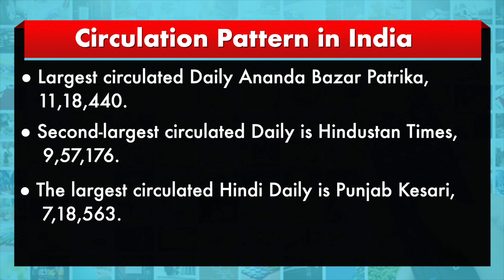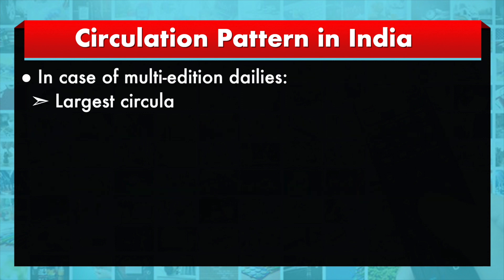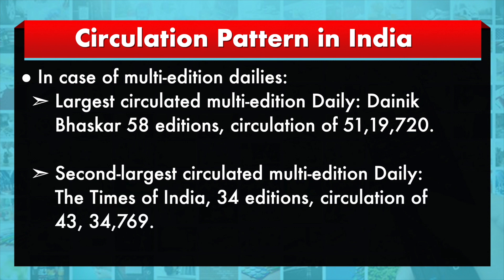The largest circulated Hindi daily is Punjab Kesari, published from Jalandhar, with a circulation of about 7,18,000. In the case of multi-edition dailies, Dainik Bhaskar has 58 multi-city editions, and its combined circulation comes to around 51,20,000. The second largest multi-edition daily is the Times of India with 34 editions and a circulation of about 43,34,000.